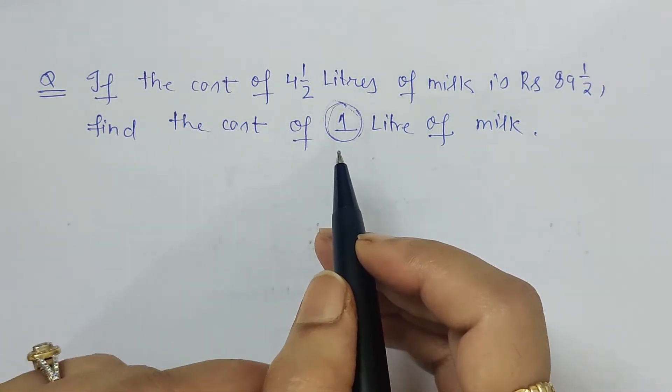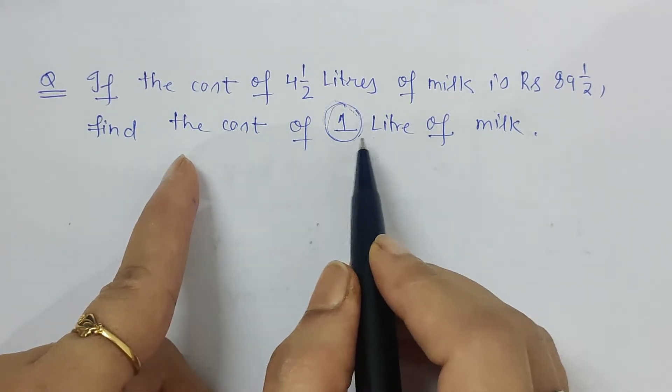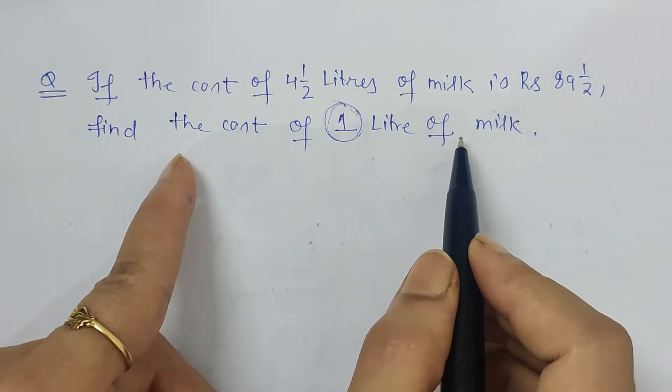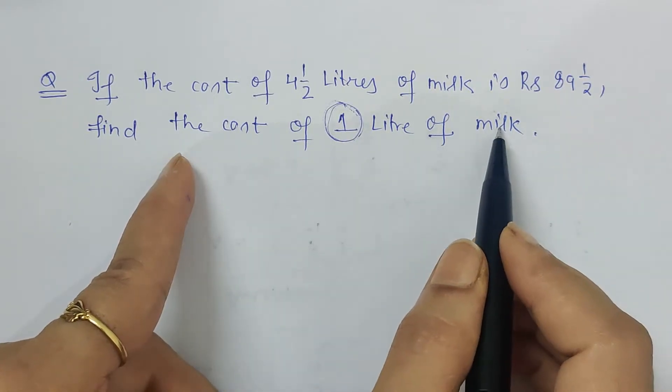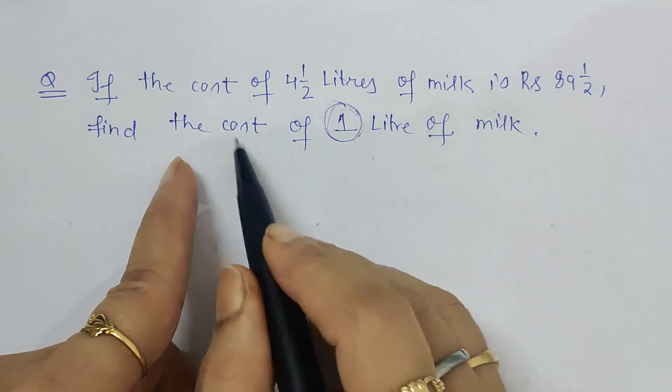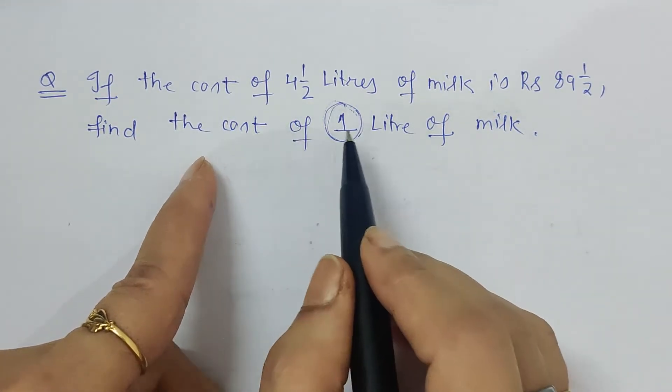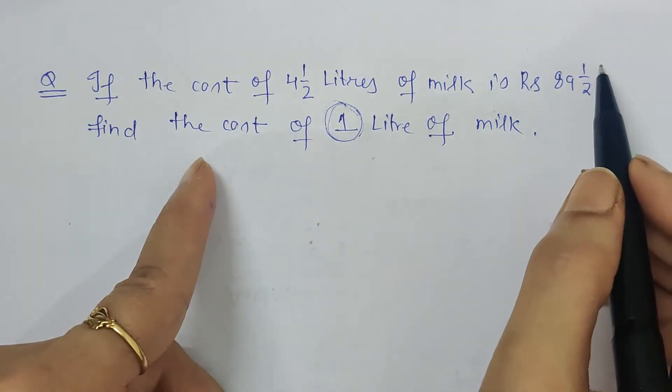Here I am again with you with a word problem: find the cost of one liter of milk. What does it mean? Whenever we have to find one unit of anything, we have to divide. When we have to find cost of one unit of anything, what do we have to do? We have to divide.